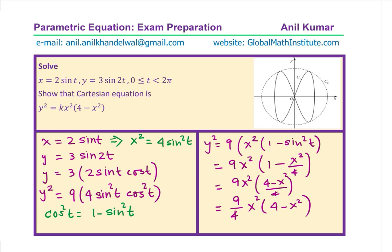We have written y² as required and now we can compare the coefficients. That gives us k as equal to 9 over 4. If you compare the value of k, it is 9 over 4. We get our result where k is equal to 9 over 4. That is how we can write the Cartesian equation from the given parametric equation.